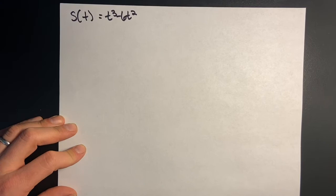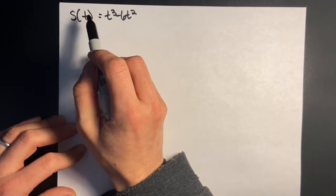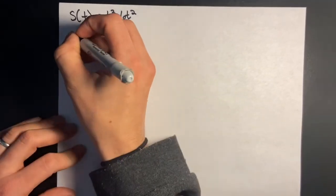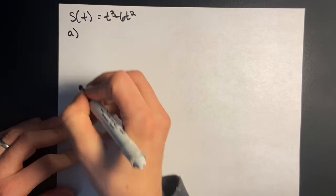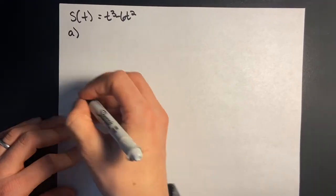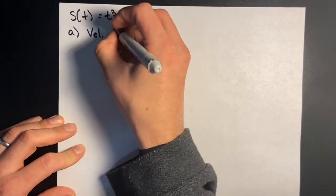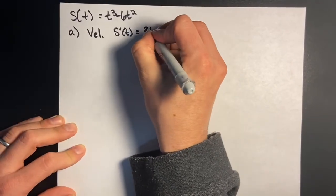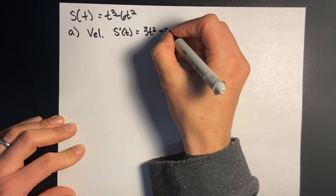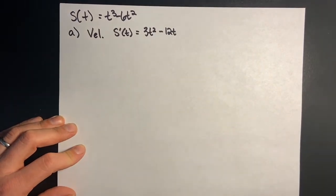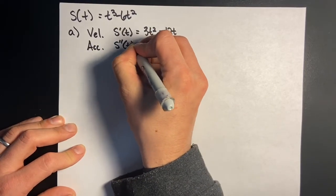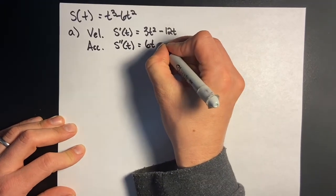In this next problem, s(t) gives me the position of a particle moving in feet per second. Part a asks me to find the velocity and acceleration functions. The velocity function is s'(t) equals 3t² minus 12t. The acceleration function is s''(t) equals 6t minus 12.